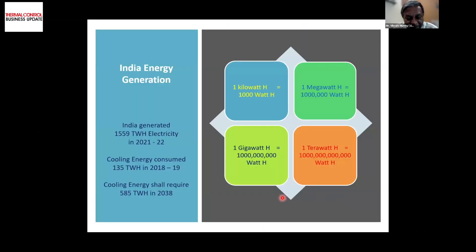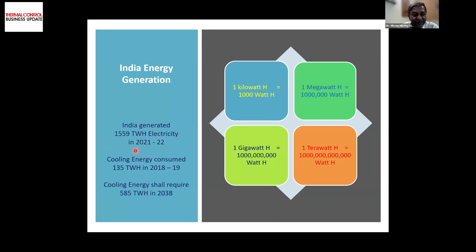We come to the major problem: we are a huge consumer of energy. We have a very large population and consume a lot of energy, but per capita electricity consumption is very low in India because only around 10–20% of us consume most of the energy for comfort, manufacturing, and production. Two years back, India generated 1,559 terawatt hours. The USA is around 4,000 terawatt hours and China around 7,000. Between these three countries, 12,000 terawatt hours of energy are used every year, while the whole world uses 24,000 — so half the world's energy is consumed by just three countries. We must be mindful of saving energy where we can.